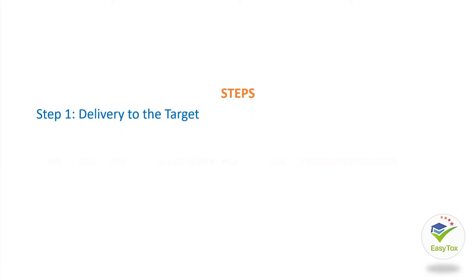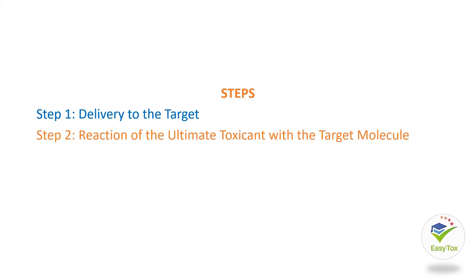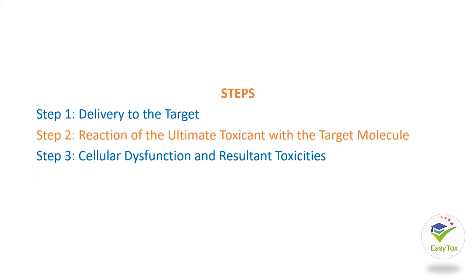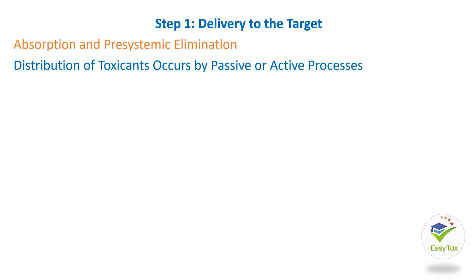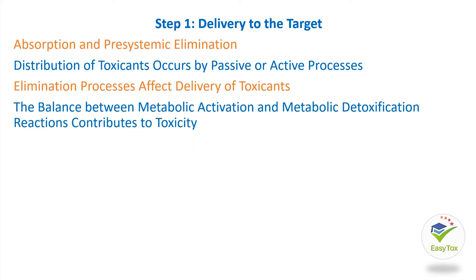Step 1: Delivery to the Target. This covers Absorption and Presystemic Elimination. Distribution of toxicants occurs by passive or active processes. Elimination processes affect delivery of toxicants. The balance between metabolic activation and metabolic detoxification reactions contributes to toxicity.